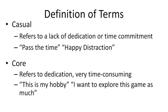Phrases one would associate with casual are time killer, pass the time, or just a happy distraction. Core, on the other hand, is the opposite. If something is described as core, it means that it's integral to or at the center of something. We're going to use it specifically to refer to something that requires dedicating a certain amount of time to it. An example would be hobbies — we might do them for fun, but we also dedicate certain parts of our day to pursue them.